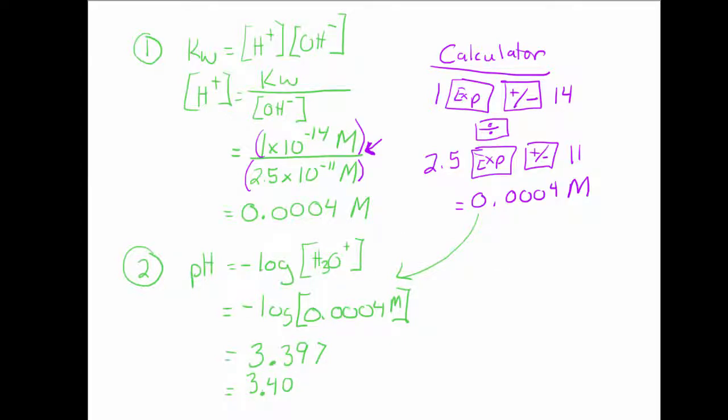In the calculator, the way you would get that is type the positive-negative switch button, log, and then the concentration. Make sure that you're getting both of those steps correct with your calculator. All right, well done, miigwetch.